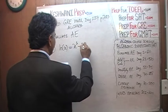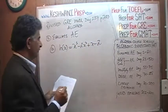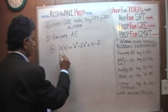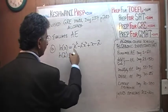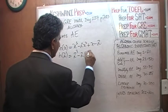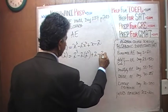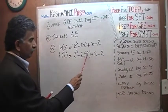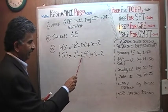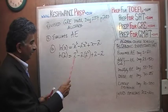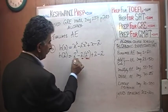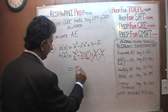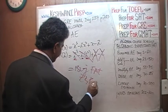h(x) equals x cubed minus 2x squared plus x minus 2, and we need to find the value when x equals 2. We replace x with 2: 2 cubed minus 2 times 2 squared plus 2 minus 2. Now, 2 cubed is 8, and 2 times 2 squared is 2 times 4, which is also 8 — so those cancel. And positive 2 minus 2 also cancels. The answer is 0.